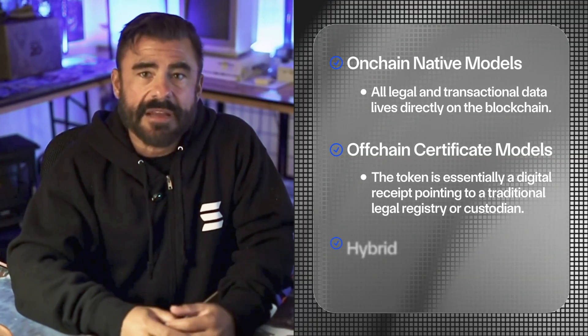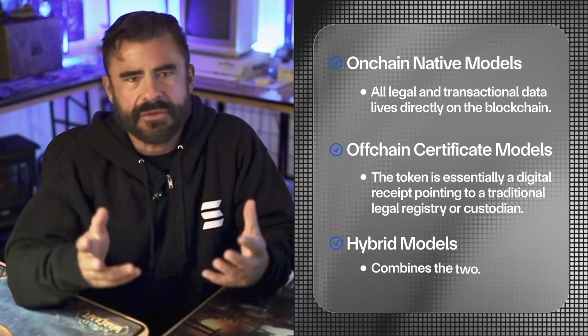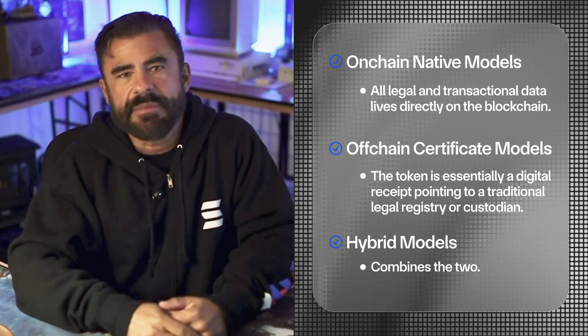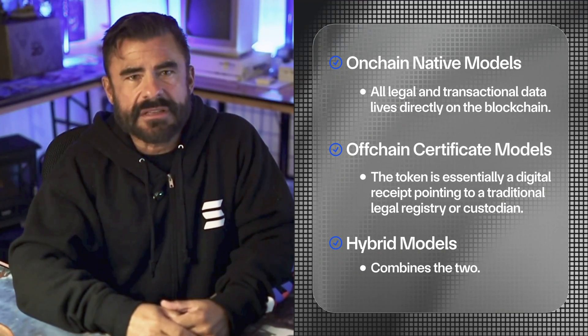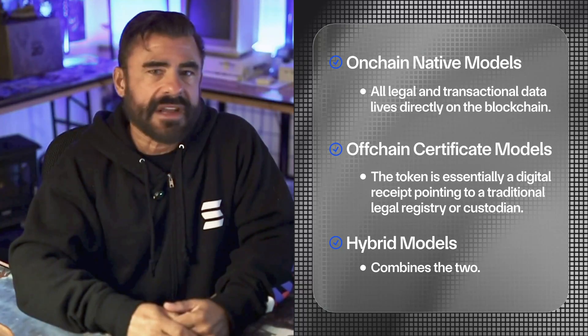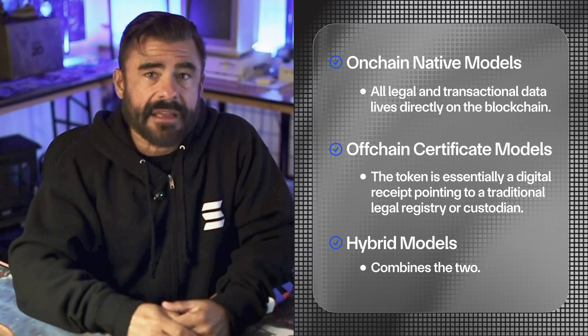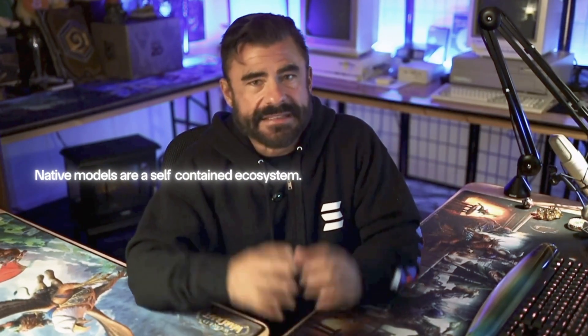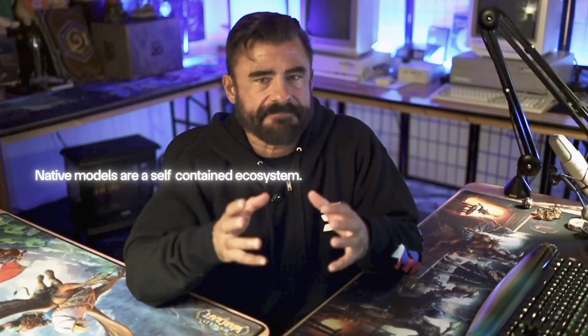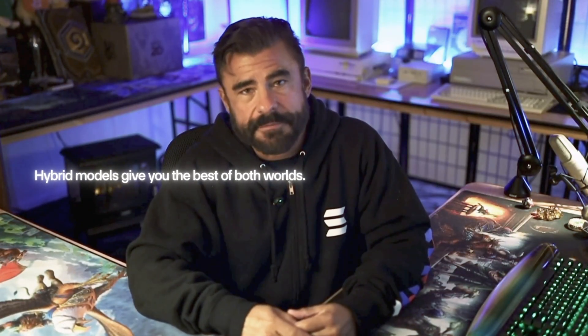And third, hybrid models, which combine the two, keeping sensitive legal data off-chain for privacy, but using the blockchain for ownership transfers, settlement, and programmability. Think of it like this: native models are a self-contained ecosystem, off-chain models are like a claim check, and hybrid models give you the best of both worlds.